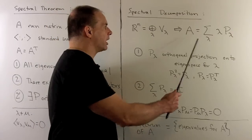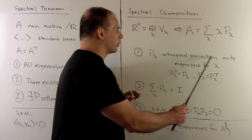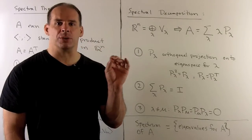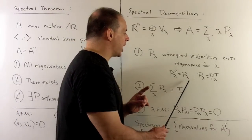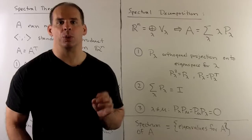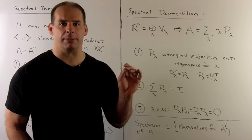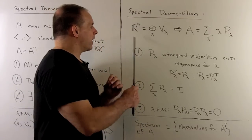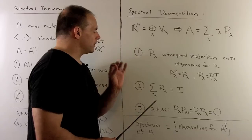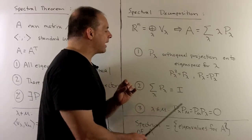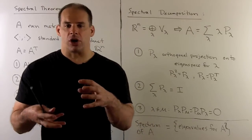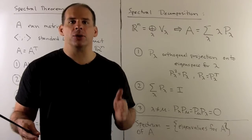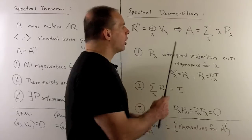To clarify: for P sub lambda to be an orthogonal projection, I need two conditions. First, that P sub lambda squared equals P sub lambda — that's what it means to be a projection. To be an orthogonal projection, we also need P sub lambda equals P sub lambda transpose. Because we have an orthogonal direct sum of R^n, if we take the sum of our projection operators, we get back the identity. So we're pulling the identity apart into projection operators, putting in our eigenvalues, and when we put everything back together, we get A.